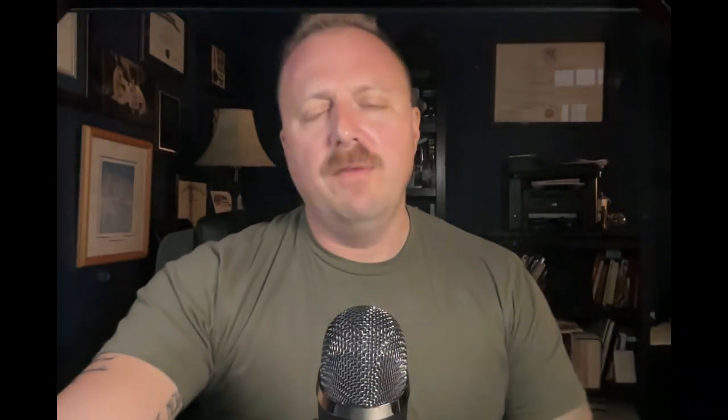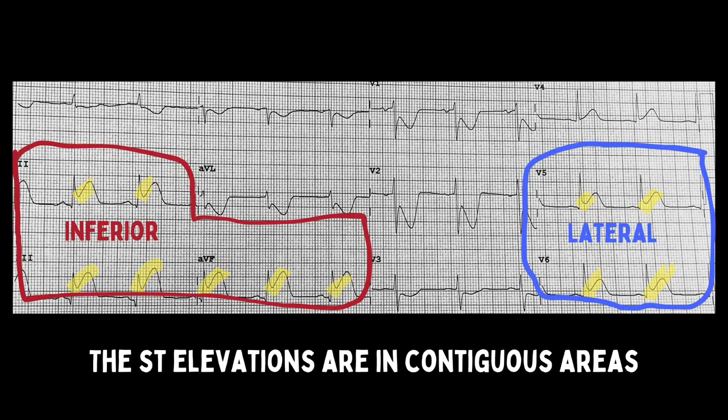However, look at this 12-lead EKG. Here, we see elevated J points with elevated ST segments. The elevations occur in contiguous leads 2, 3, and AVF, which are inferior leads, and in V5 and V6, which are lateral leads.